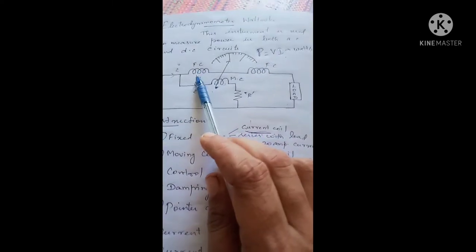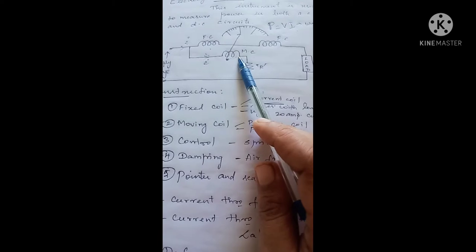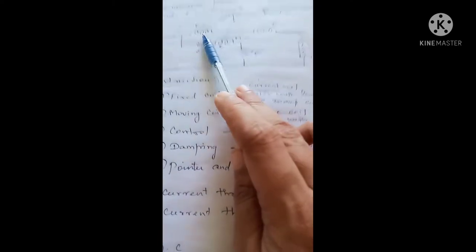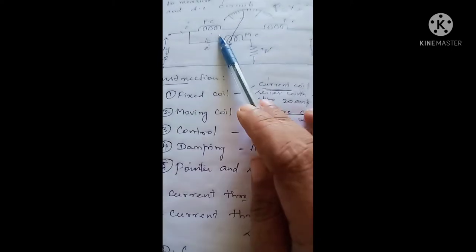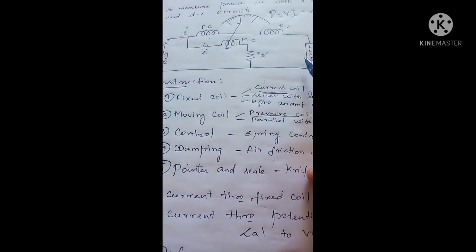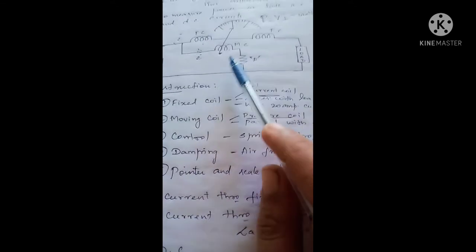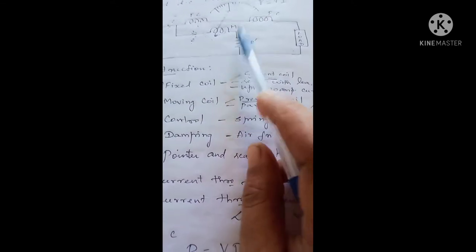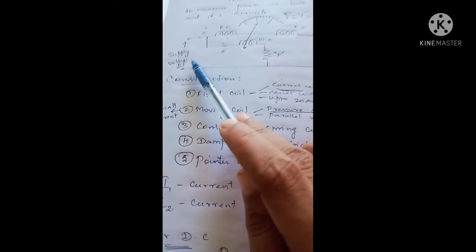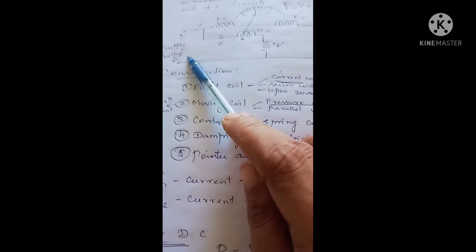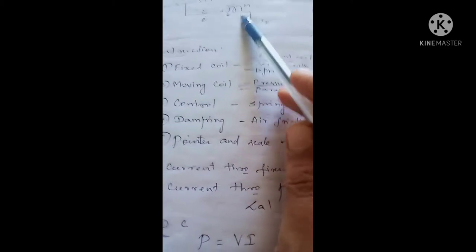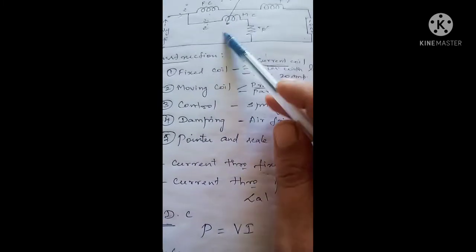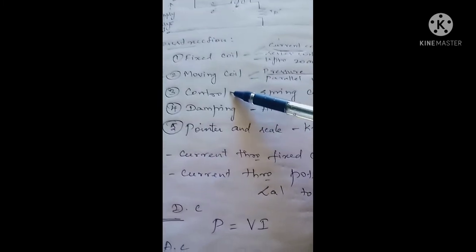The fixed coil is connected in series with the load and it carries the current to the load, so it's called the current coil. The moving coil is connected in parallel with the supply voltage and hence it's called the pressure coil or potential coil.